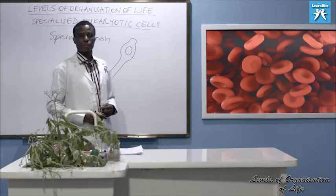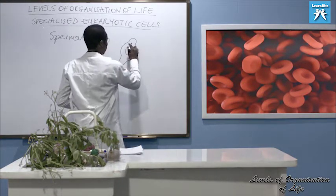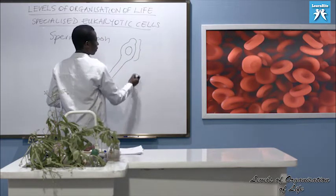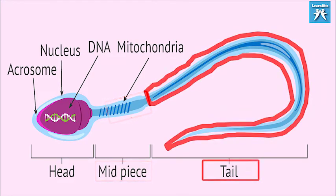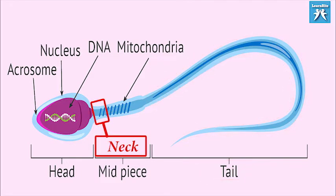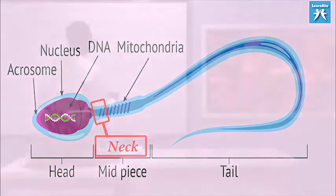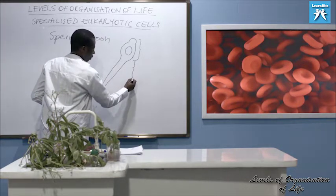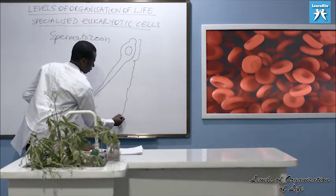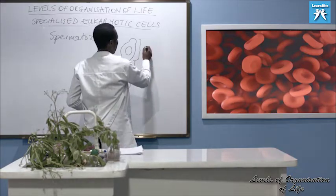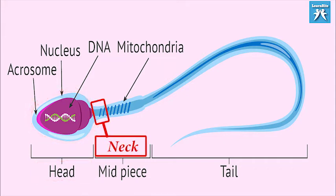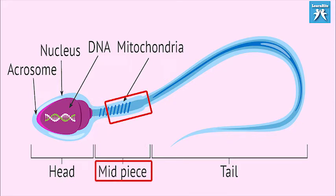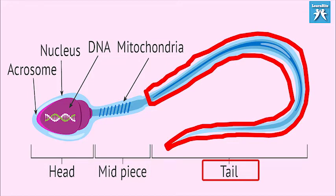The sperm cell is made up of the head — this is where we have the nucleus. The whole of this is the head. Then we have the middle piece and the tail piece. Between the head and the middle piece, we have the neck. So: head, neck, middle piece, and tail piece.